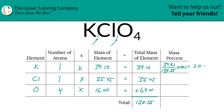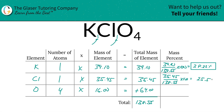So potassium is going to be 28.22%. Next, for chlorine, we do the same thing. The total mass of chlorine in the compound was 35.45. Divide that by the total mass of the entire compound, which was 138.55, multiply by 100, and the percent composition here is going to be 25.59%.